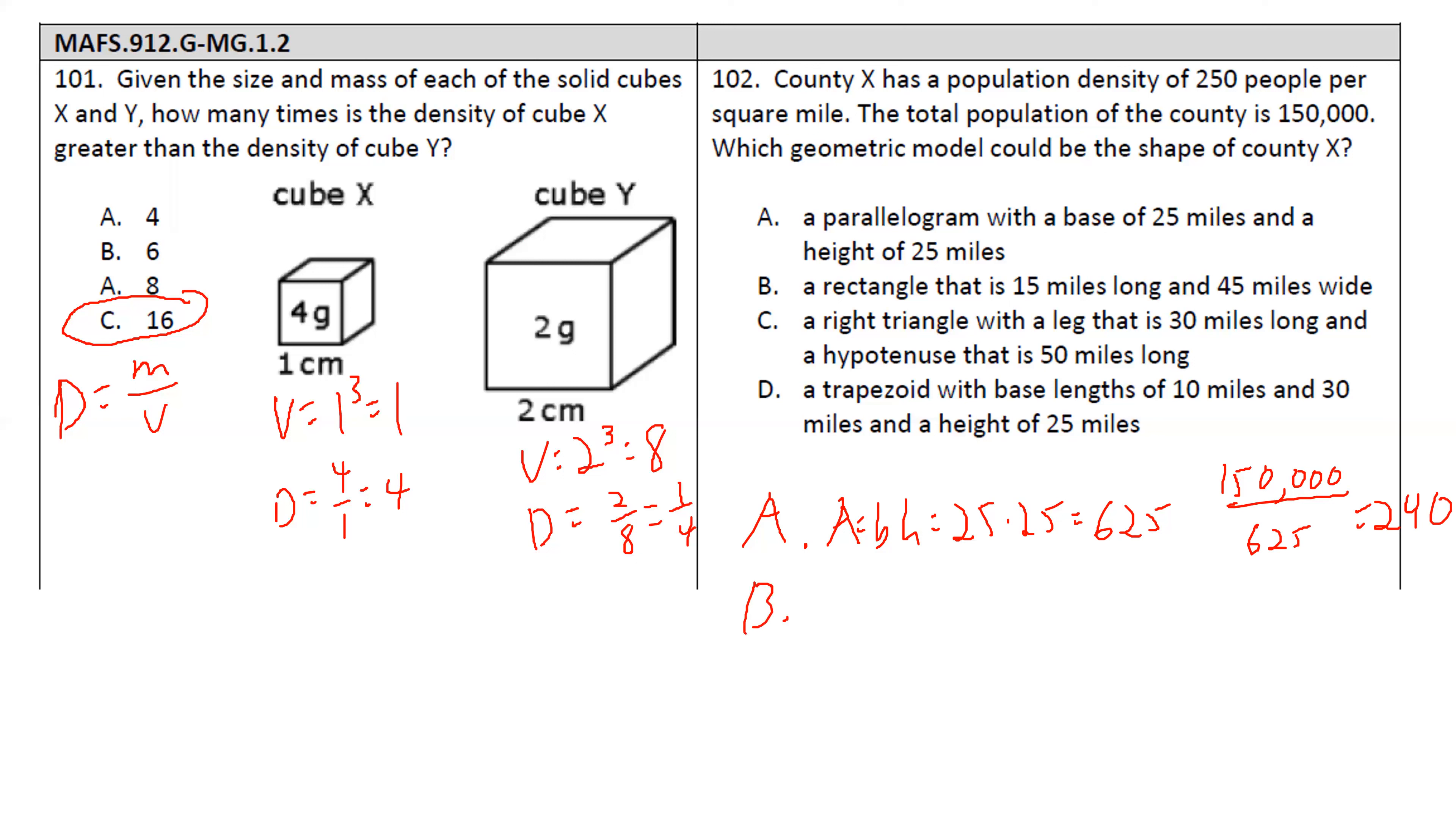The next one, rectangle. Same formula. We got 15 times 45. Well, I don't even really need to try this one because I'm dividing by a bigger number. I'm going to get an even smaller value. So that's going to be further away from 250. I want to get to 250. So that's not it. For C, a right triangle with a leg that is 30 miles long and a hypotenuse that is 50. Well, I'm going to need both legs to find my area. What's the other leg?